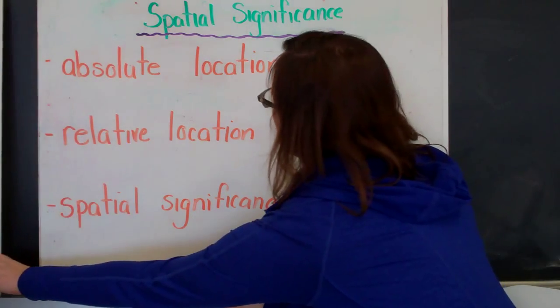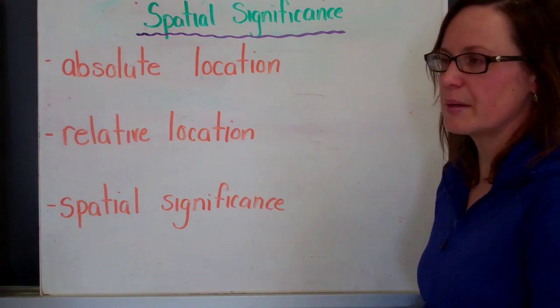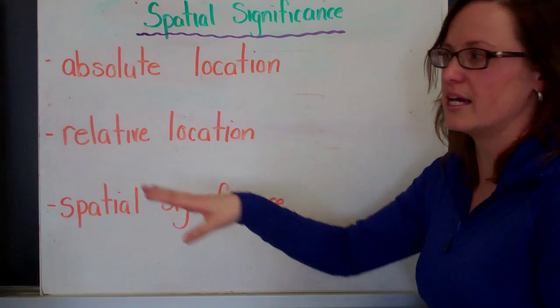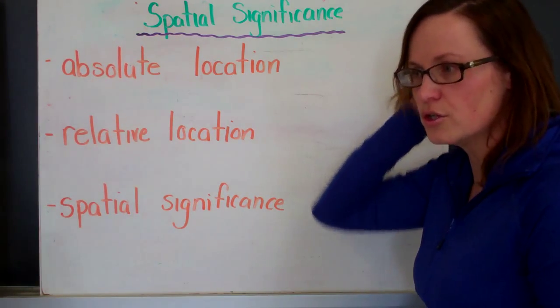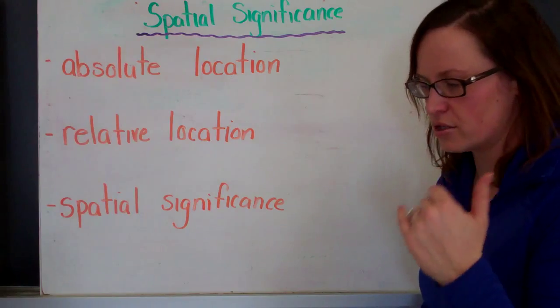So the next is spatial significance. This is talking about a specific location. So an absolute location is using actual coordinates, longitude and latitude.